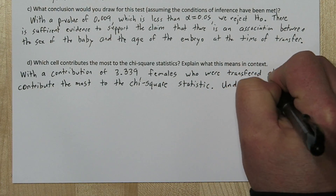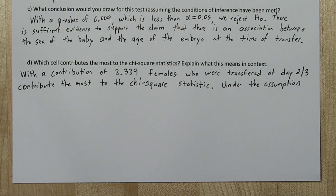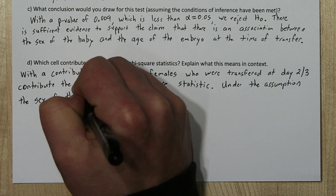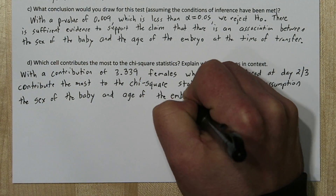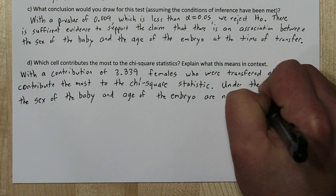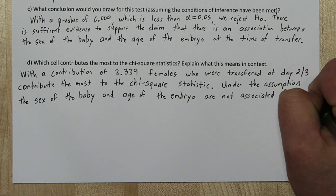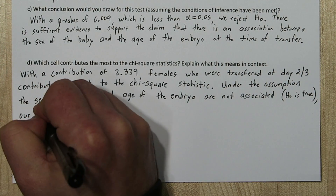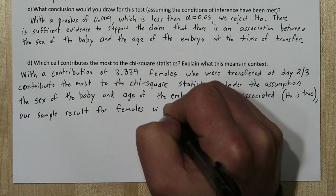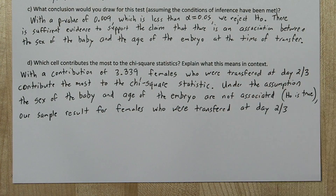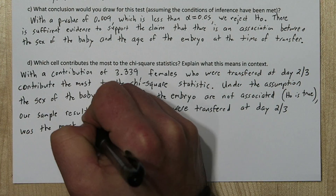Under the assumption that the sex of the baby and the age of the embryo are not associated — meaning the null hypothesis is true — our sample result for females who were transferred at day 2-3 was the most surprising.